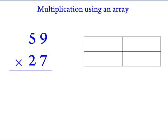First we need to think about both factors in expanded notation. 59 can be thought of as 50 plus 9, and 27 can be thought of as 20 plus 7.